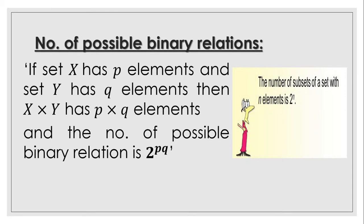Number of possible binary relations: If set X has p elements and set Y has q elements, then we know the Cartesian product set has p multiply by q elements.